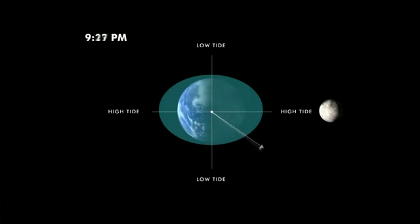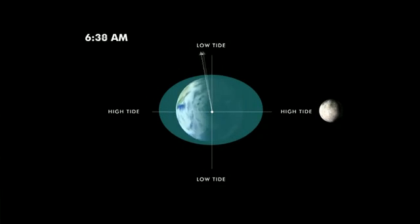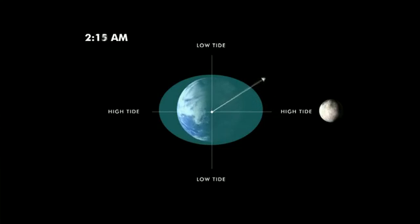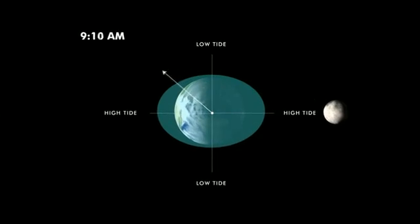As the Earth rotates over the course of the day, you standing on the surface move along with the Earth's surface into these bulges, and we experience that as the rising and lowering tides. Really, we on the surface of the Earth are moving through bulges created by the Moon's gravity and the Sun's gravity as well.